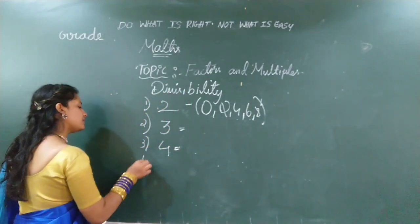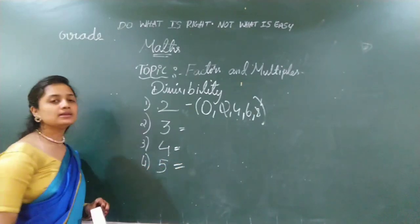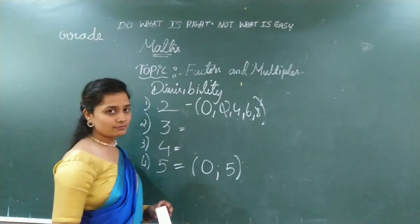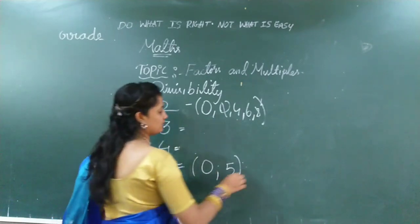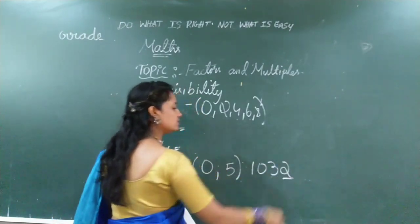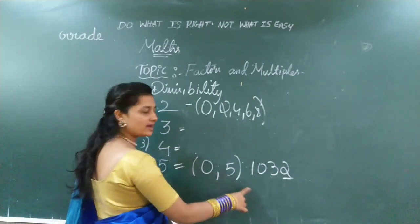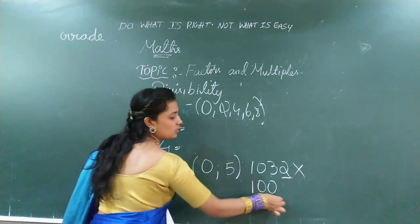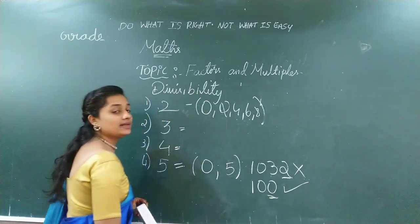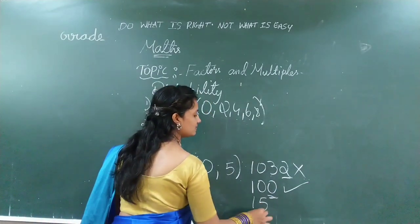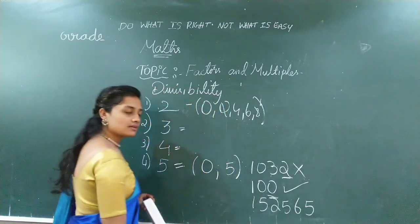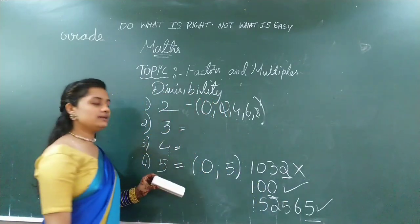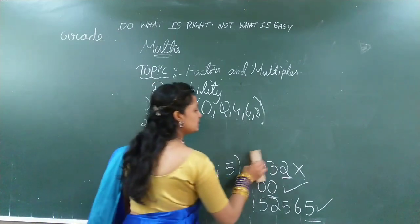Next, we go for divisibility by 5. This is very easy. You should have 0 or 5 in the units place — only then the number will be divided by 5. For example, if you see 2 in the units place, it is not divisible by 5. If you have 0 in the units place, it is divisible by 5. If you have 5 in the units place, it can also be divisible by 5. So, this is the divisibility rule for 5.